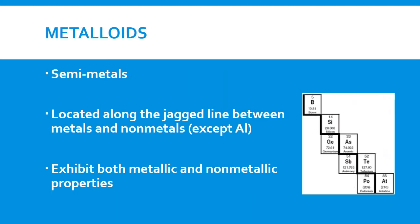The elements that lay along that jagged line, except aluminum, they're called metalloids or semi-metals. And think of the word semi meaning half or part in some cases. They're called metalloids or semi-metals because they exhibit both properties of metals and non-metals. So if it's a non-metal, it will show properties of metals and non-metals. If it's a metal, it will show properties of both metal and non-metals.